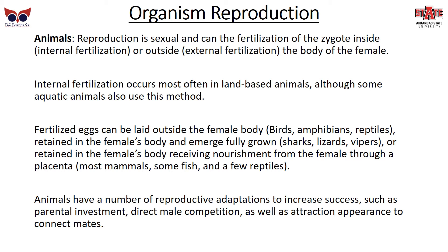Internal fertilization occurs most often in land-based animals, though some aquatic animals use this method. Fertilized eggs can be laid outside the body — as in birds, amphibians, or reptiles — or retained in the female's body and emerge fully grown, as in sharks, lizards, and vipers. Alternatively, the offspring can be retained in the female's body and receive nourishment through a placenta, which is what most mammals and some fish and reptiles use. Animals also have reproductive adaptations to increase success, such as parental investment, direct male competition to spread the best genetic information, and attraction appearance — like why a peacock is so beautiful — to attract mates and pass on their genes.